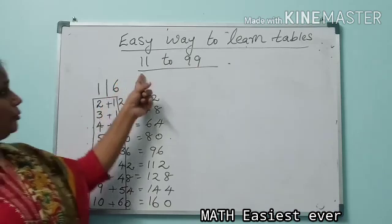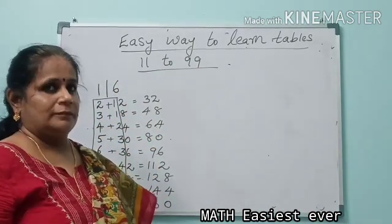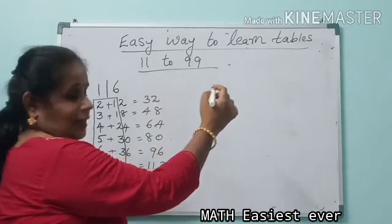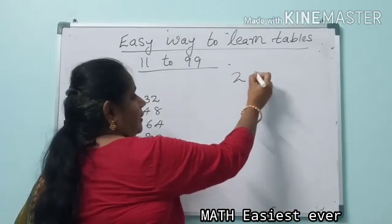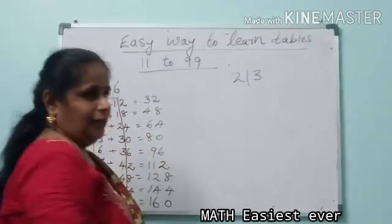Any number from 11 to 99 can be done with the same method. We will go for another example: 23. Now, as I told you, split this 2 and 3.